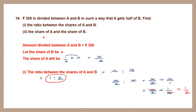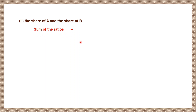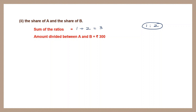Now for the second part: finding the actual share of A and B. The ratio is 1 is to 2, so the sum of ratios is 1 plus 2 equals 3. The total amount is 300 rupees. The share of A is 1/3 into 300 rupees.